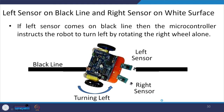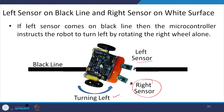Second condition: the left sensor comes onto the black line while the right sensor remains on the white surface. In this case, the microcontroller instructs the robot to turn left by activating the right wheel motor alone.